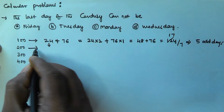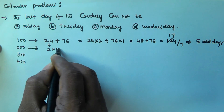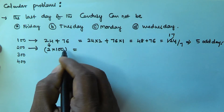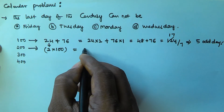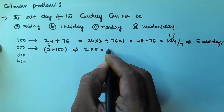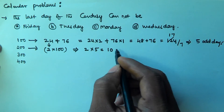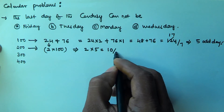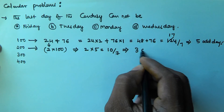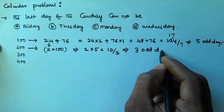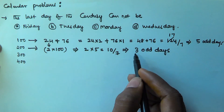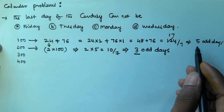For 200 years, that is 2×100 years. Since 100 years contains 5 odd days, 200 years gives 2×5 = 10 odd days. Dividing 10 by 7, the remainder is 3. So 200 years contains 3 odd days.